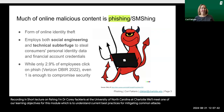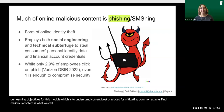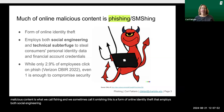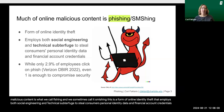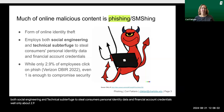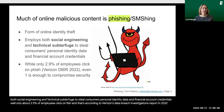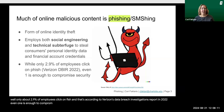Much of online malicious content is what we call phishing, and we sometimes call it smishing. This is a form of online identity theft that employs both social engineering and technical subterfuge to steal consumers' personal identity data and financial account credentials. While only about 2.9% of employees click on phish — according to Verizon's Data Breach Investigations Report in 2022 — even one is enough to compromise security.